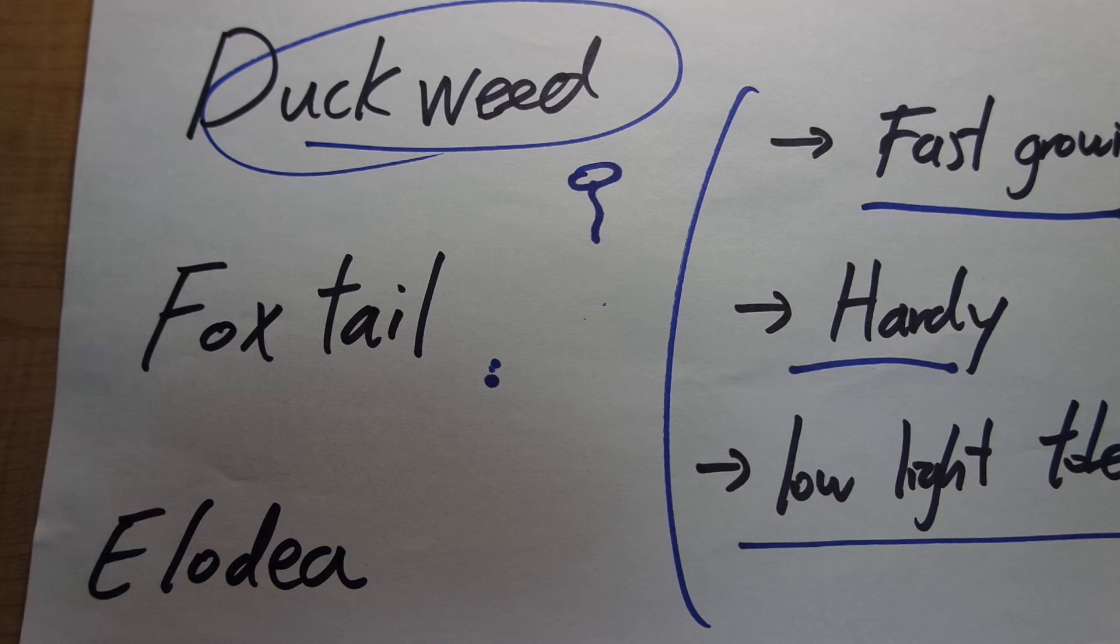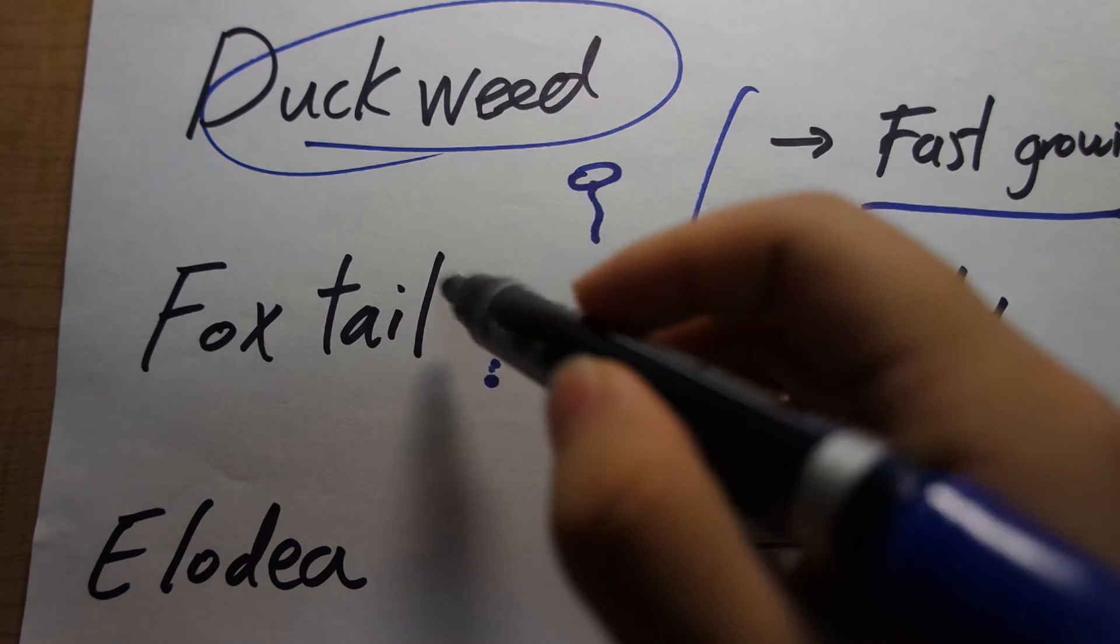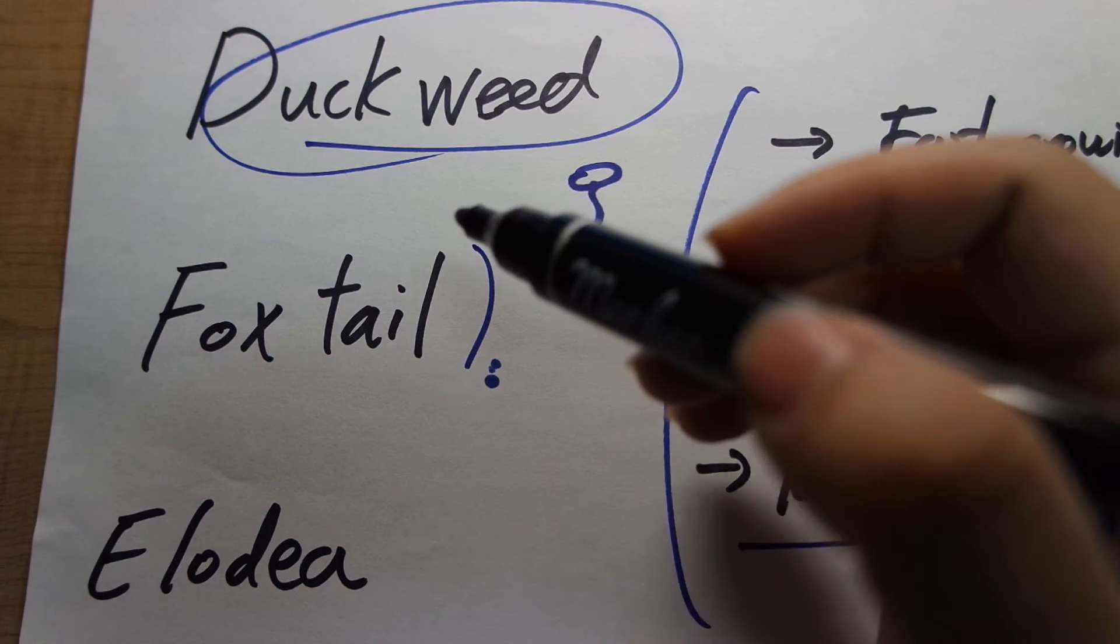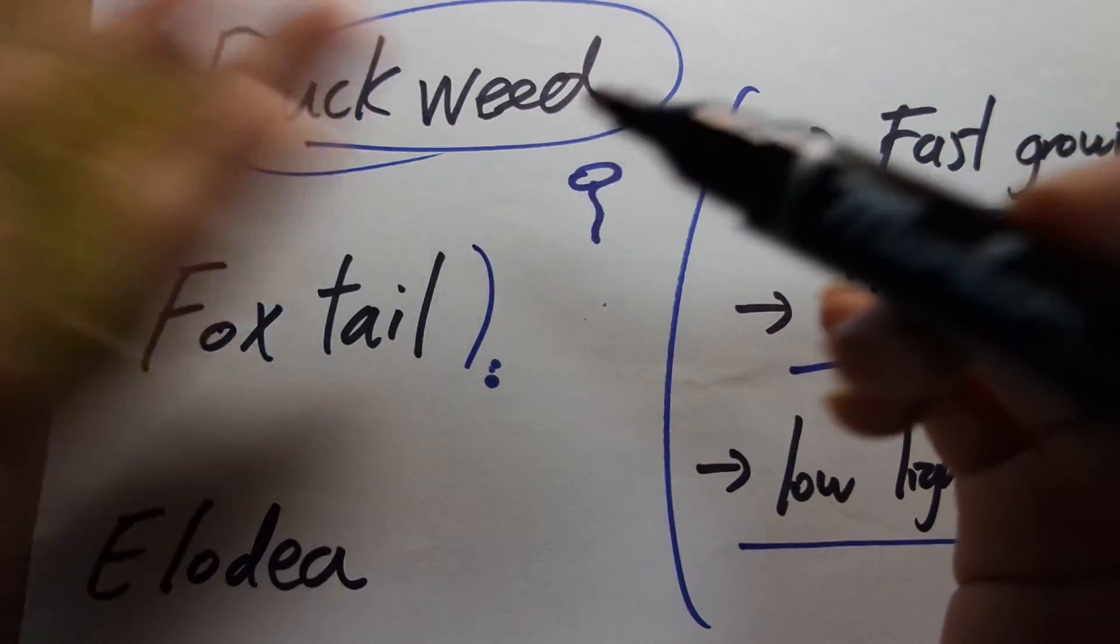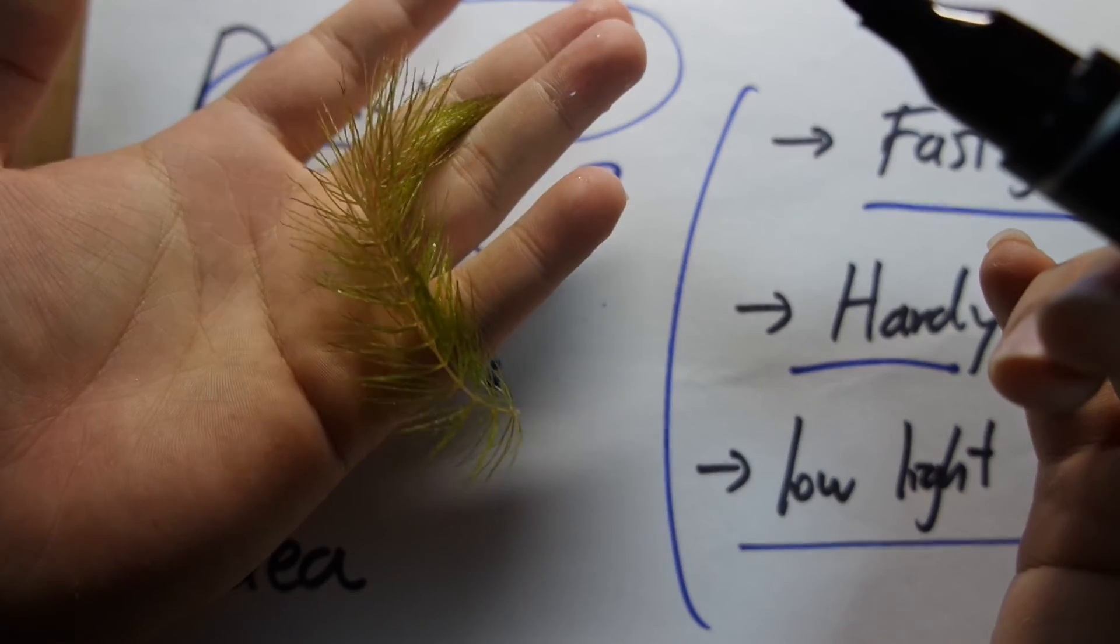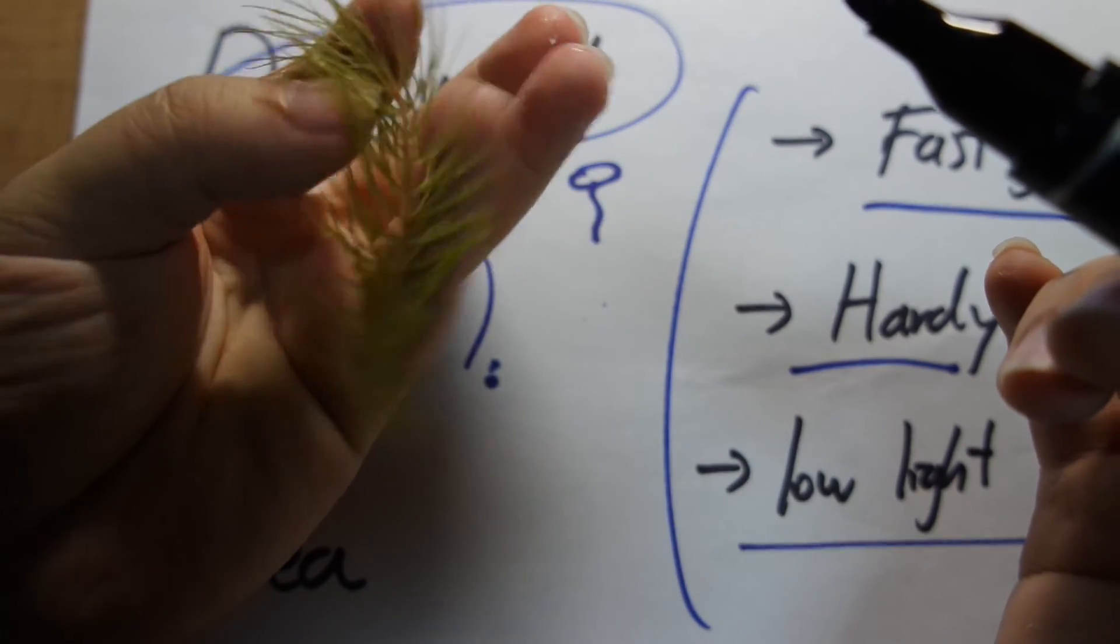And the second one I'm going to discuss is foxtail. Foxtail, I have some right here. It looks something like this. There are a variety of subspecies. Some are larger, some are smaller. This is a smaller one.